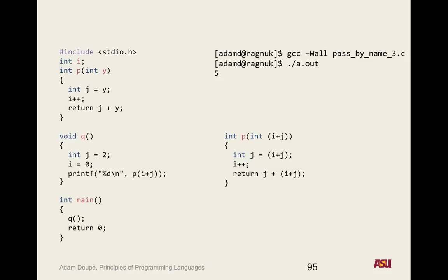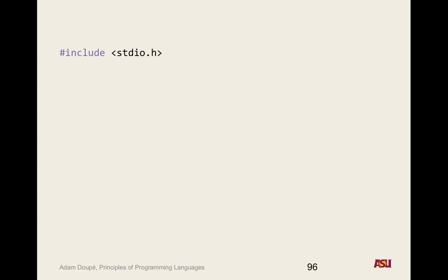The problem is this function is using global data that we're also using in our expression passed by name. That changed what our expression i plus j evaluated to. Depending on the ordering — if i++ happened first, that would change the value we get back. Does this seem like an easy way to code? This is why we don't use programming languages that have pass by name.